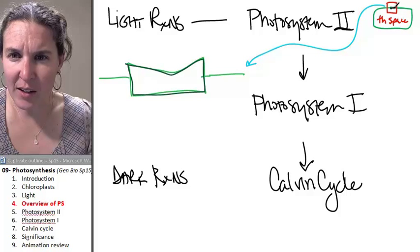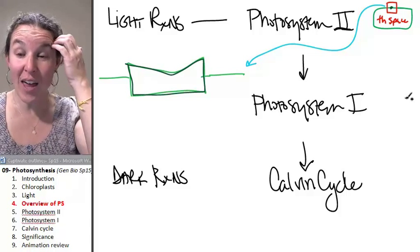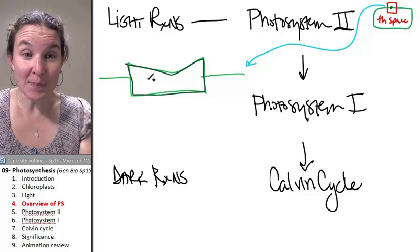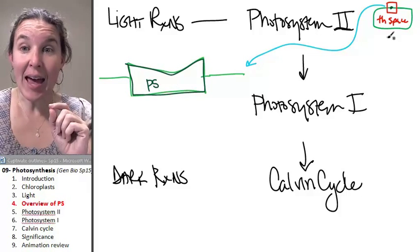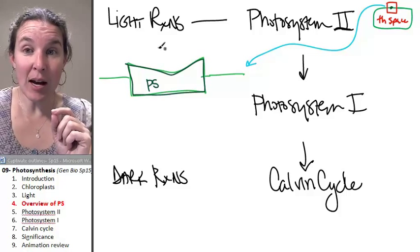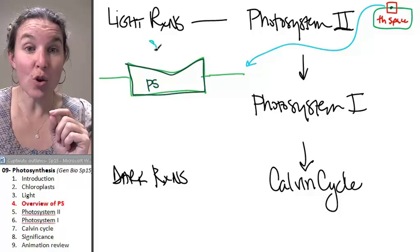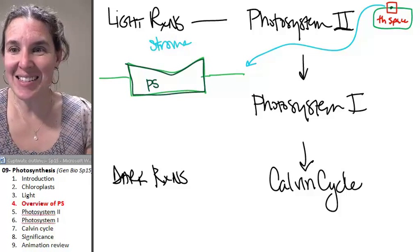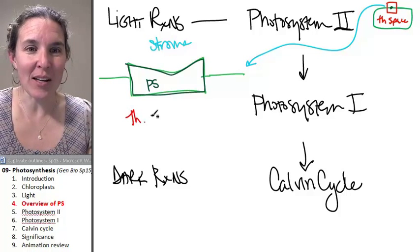And so, I'm going to make a dot in here so that you can see that, yeah, that's the photosystem. And this is my stroma, which is basically the chloroplast cytoplasm. And this is my thylakoid space.